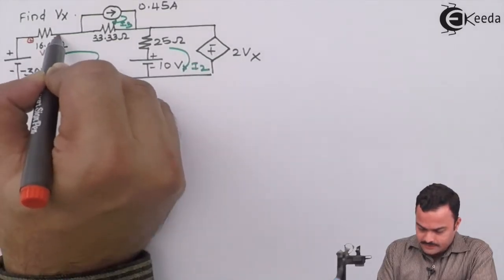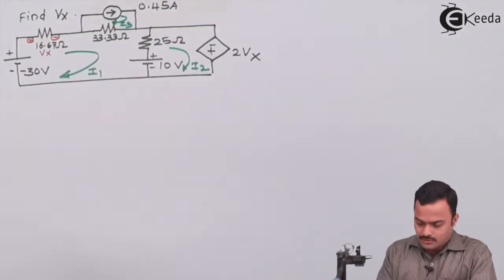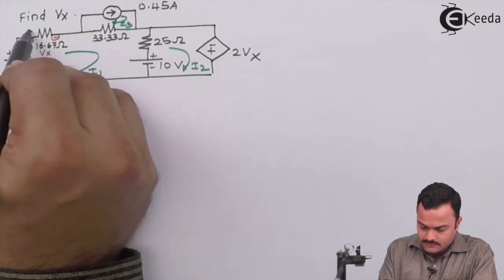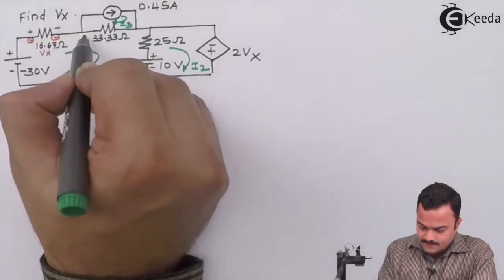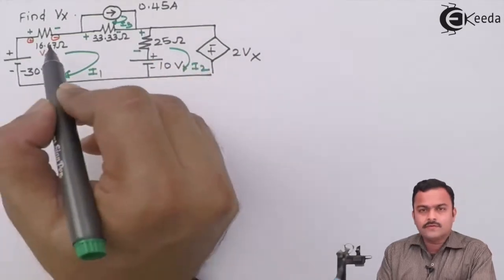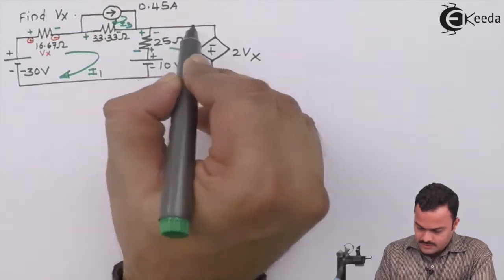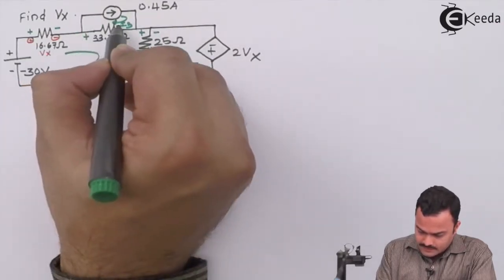So this is the drop given by them. Let's encircle and mark our drop based on the current direction. We'll be having a drop like this, like this, like this for mesh 1, for mesh 2, and for mesh 3.